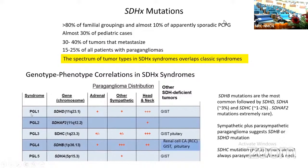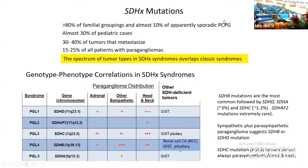This table briefly lists the locations and types of syndromically associated tumors in paraganglioma syndromes associated with mutations of the different SDH genes. A common finding in several of these is the presence of gastrointestinal stromal tumor or renal cell carcinoma. Pituitary neoplasia may also occur in some patients.